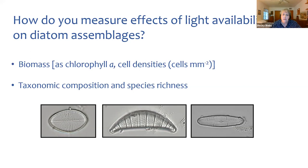The second parameter may be taxonomic composition and species richness. Species richness tends to be lower in lower light environments. There are certainly taxa that are characteristic of these low light environments, although I would argue we don't know as much about it as I assumed we would when I dug into the literature.